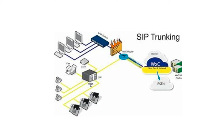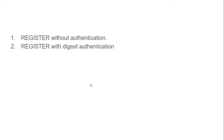There are basically two types of registration for soft phones or IP phones: register without authentication, and register with authentication. Without authentication, you just pass the user ID and the PBX will allow registration without checking a password. With digest authentication, you supply your username and password — only then will it allow you to register and make calls.